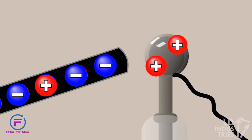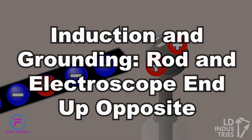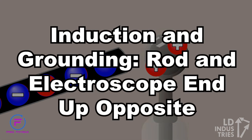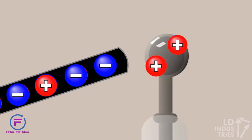This leaves the electroscope with a positive charge. And note how in induction and grounding, a negative rod will end up giving us a positive electroscope. Of course, the opposite scenario is also true.